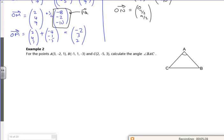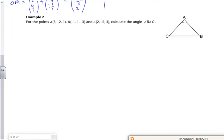Let's have a look at this one then. So it says for the points A, B, C, calculate the angle BAC. Right. So I know that OA is (3, -2, 1). I know that OB is (-1, 1, -3). I know that OC is (2, -5, 3).